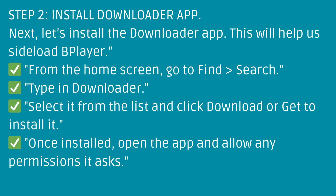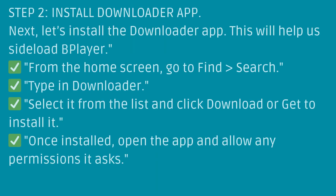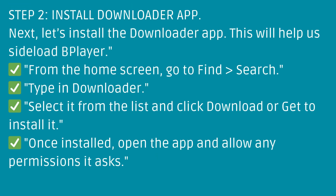Step 2: Install Downloader App. Next, let's install the Downloader App — this will help us sideload Bplayer. From the home screen, go to Find > Search. Type in Downloader, select it from the list, and click Download or Get to install it. Once installed, open the app and allow any permissions it asks.